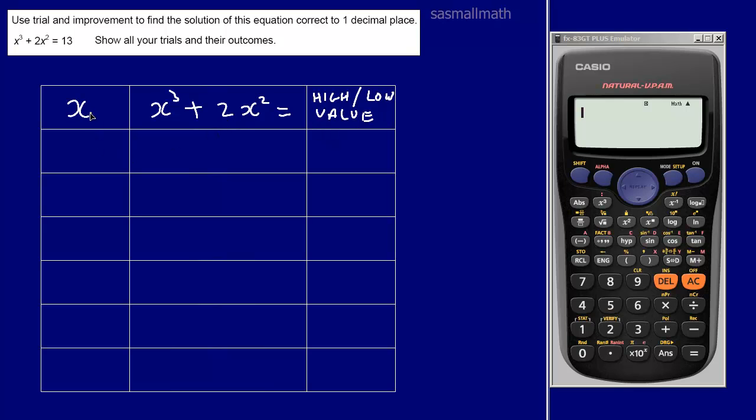So let's have a look. I think our first value we put in is one, and we'll actually show it here as one cubed plus two times one squared. That equals, well, one cubed is one, one squared is one, so we've got two times one, that's two, and add the one to it and that's three.